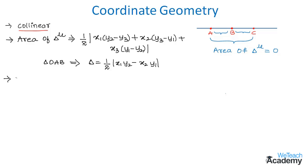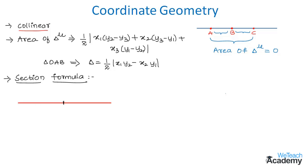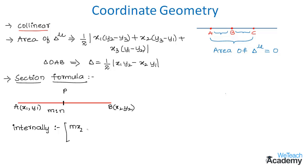Now let us discuss the section formula. Consider a line, and if point P divides the line segment joining points A and B in the ratio m : n internally, the coordinates of P are given by: P = ((mx2 + nx1)/(m + n), (my2 + ny1)/(m + n)).